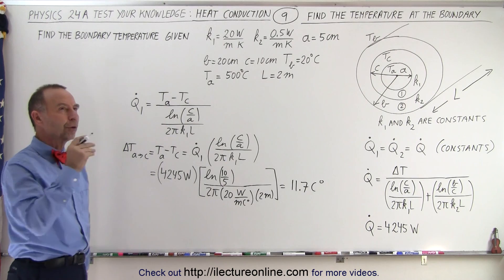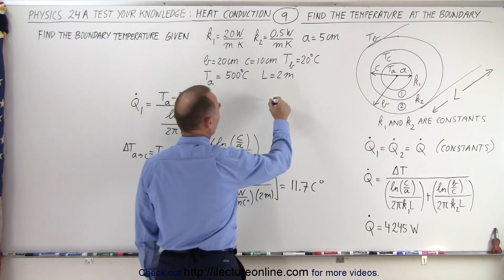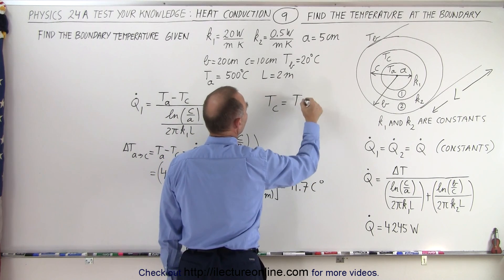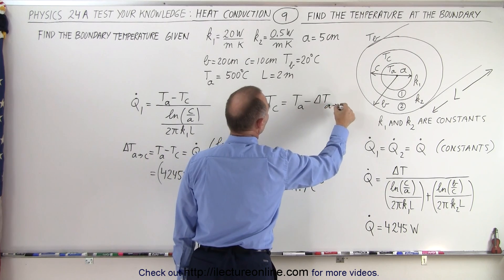Well let's see here, if we know the delta, and we know the inside temperature, that means from that equation we can say that T_C is equal to T_A minus the delta temperature from A to C.